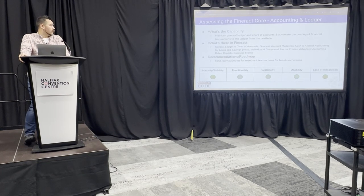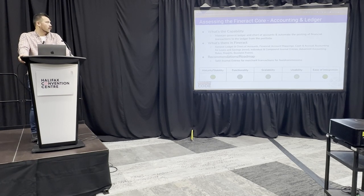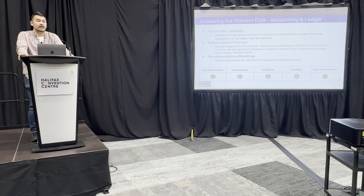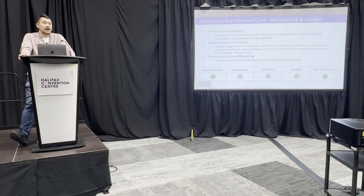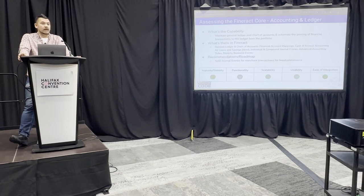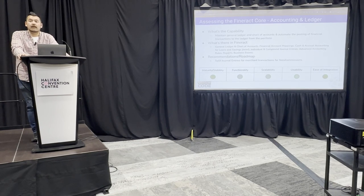Around accounting and the ledger, we're pretty strong overall, but larger institutions will often use an external accounting package. The main priority within FINRAC is fully tracking the general ledger and chart of accounts, and ensuring transactions on portfolio accounts automatically flow to the general ledger. A new feature — contributed by a customer in Nigeria — adds accrual support at the savings level for accounting. Integration with our reliable event framework is also critical here.